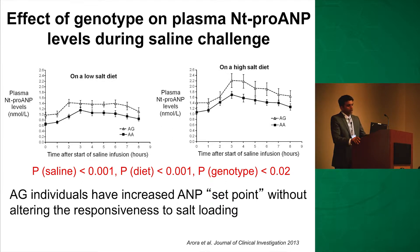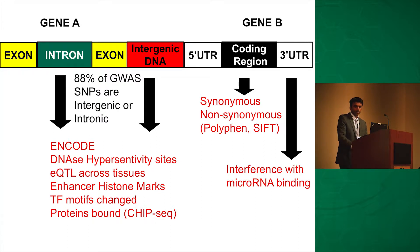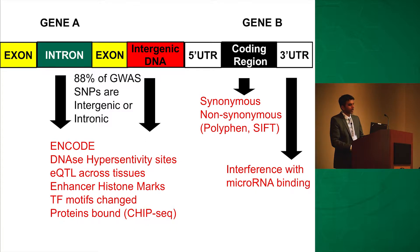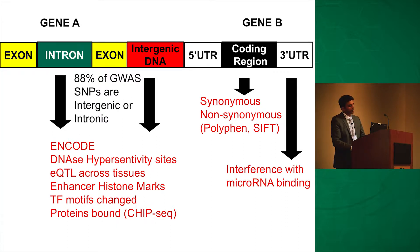We started scratching our heads — how is this happening, and how do we move from genetic association to causation? For trainees working on follow-up of genetic variants, this is how you can think about a gene. You have your exon, intron, intergenic region, 5' UTR, coding region, and 3' UTR. 88% of GWAS SNPs are intergenic or intronic. When you have an intergenic or intronic GWAS hit, there are publicly available tools you can use to get a lot of information before designing your functional experiment.